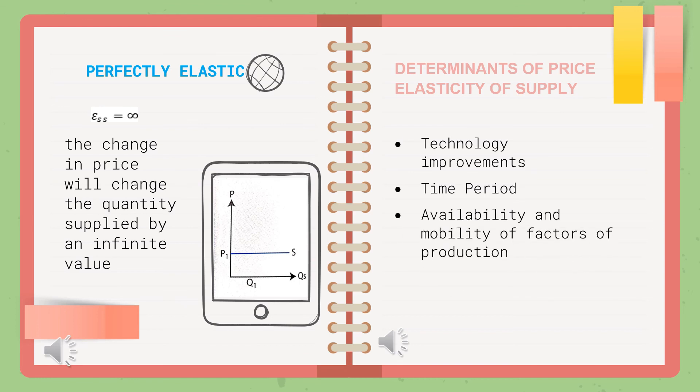The third determinant is availability and mobility of factors of production. If factors of production such as land, labour, and capital are easily available, then the quantity supplied is elastic. For example, if boba drinks are trending and the ingredients such as tapioca pearls are widely available, supply will be elastic.